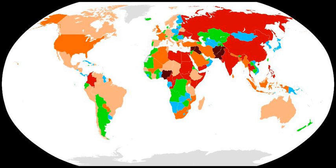The GTI has codified over 150,000 cases of terrorism. The GTI covers 163 countries, covering 99.7% of the world's population. The aim of the report is to examine trends and to help inform a positive and practical debate about the future of terrorism and the required policy responses. The GTI was developed in consultation with the Global Peace Index Expert Panel.